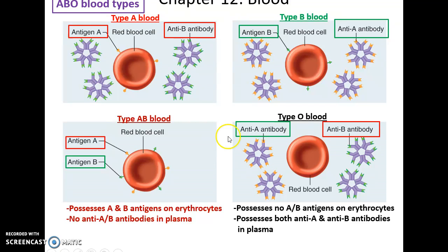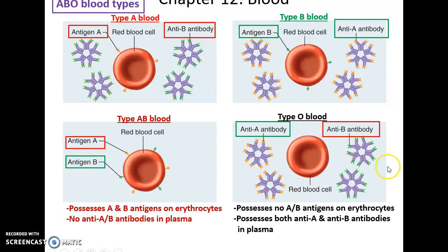Blood type A has antigen A and produces antibodies against B. Blood type B has antigen B and produces antibodies against A. Blood type AB has both A antigen and B antigen on its red blood cells, so there are no antibodies against those. And blood type O lacks the antigens and instead produces antibodies against both A and B. This is why giving someone blood with antigens they do not possess on their own blood cells can cause a reaction that is very dangerous.